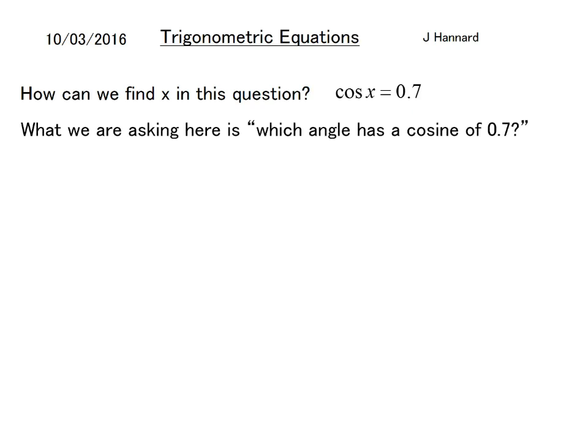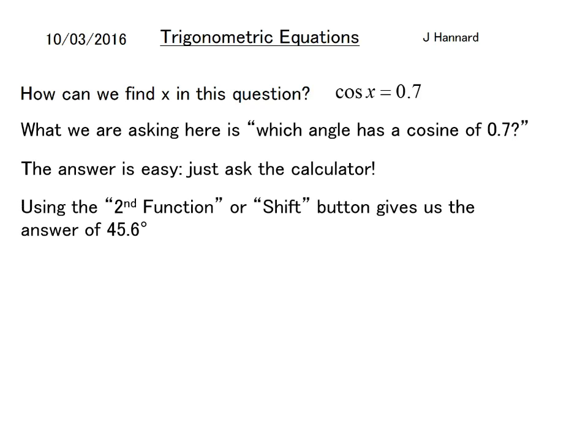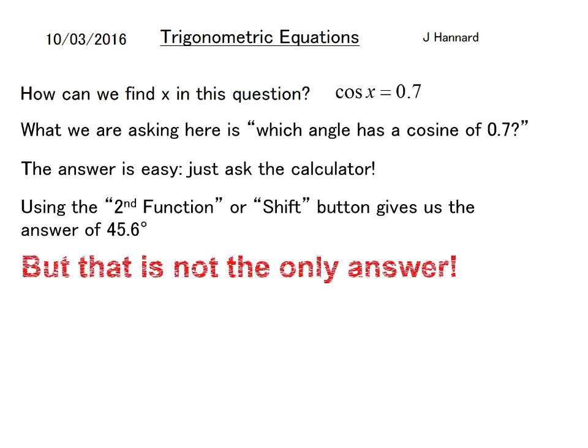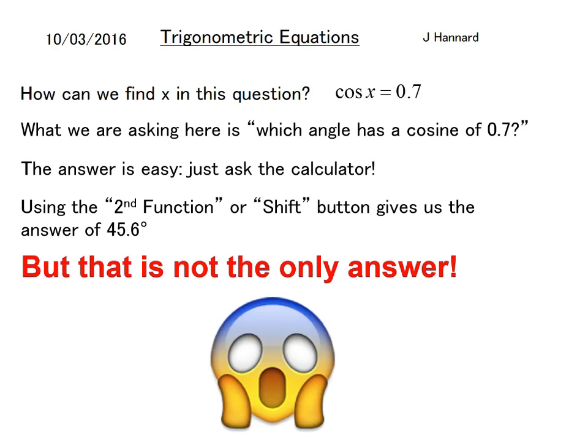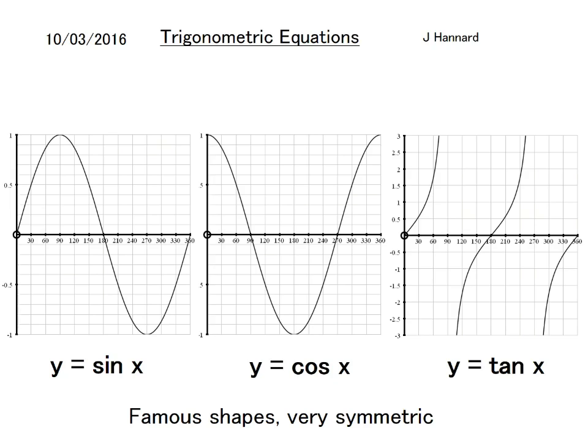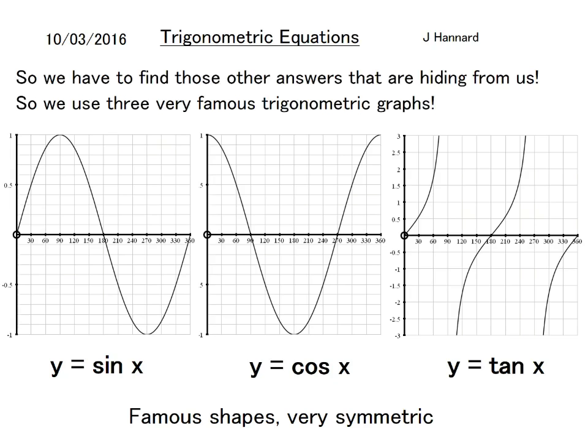We'll use our newly found trigonometric identities to help solve trigonometric equations. So how can we find x in this equation: cos x equals 0.7? What we're really asking here is which angle has a cosine of 0.7. The answer is very easy, just check on the calculator.